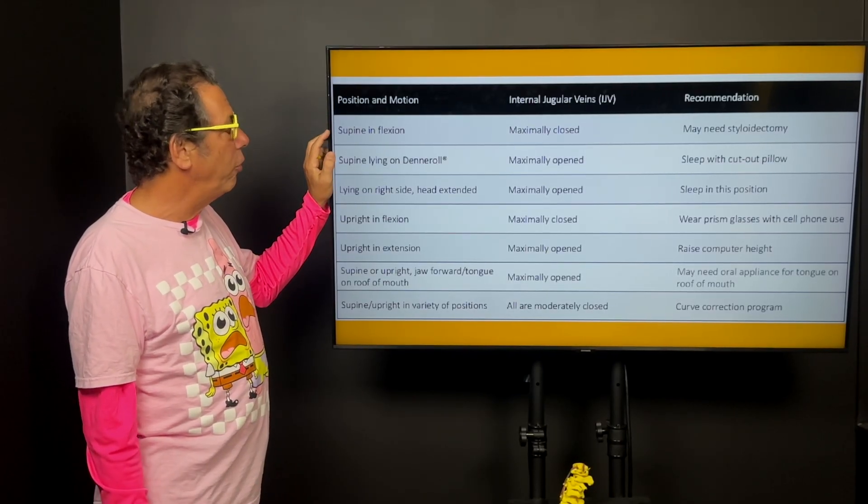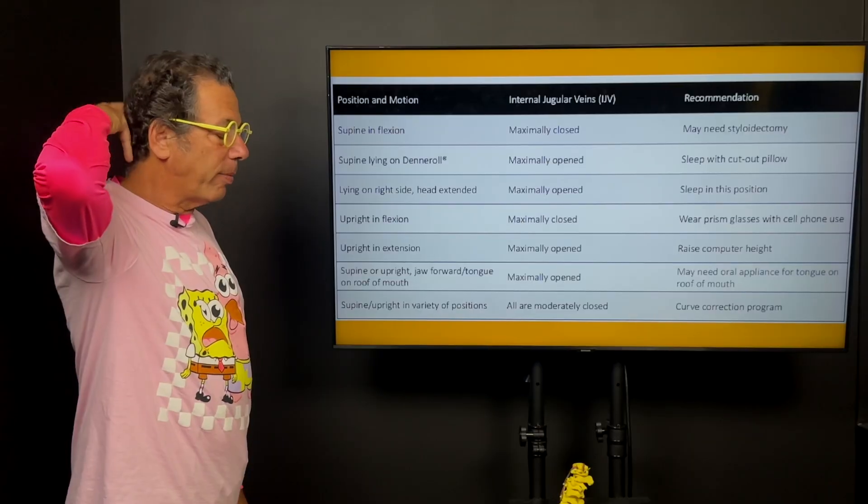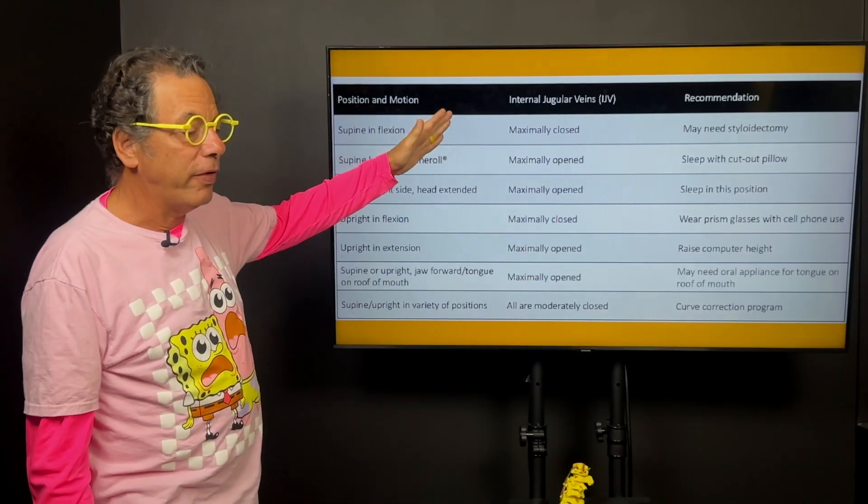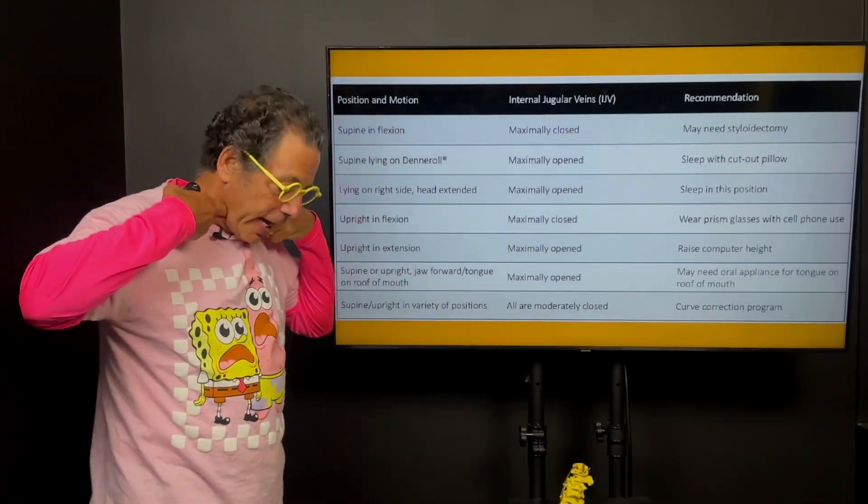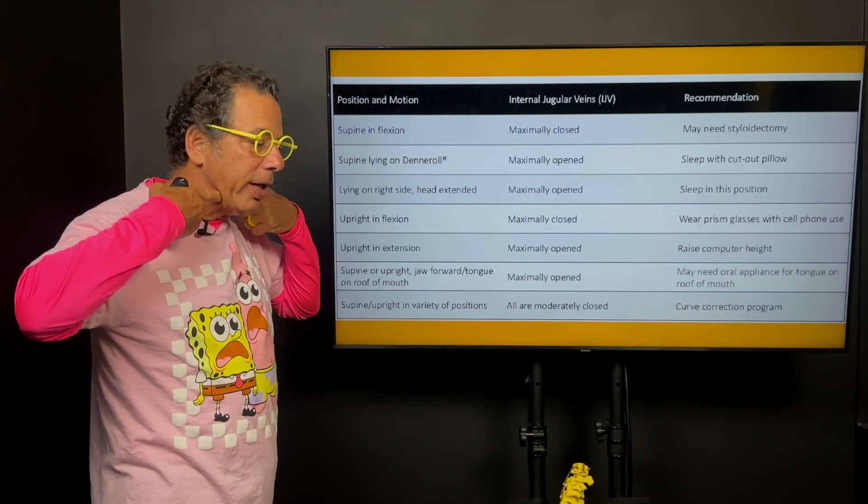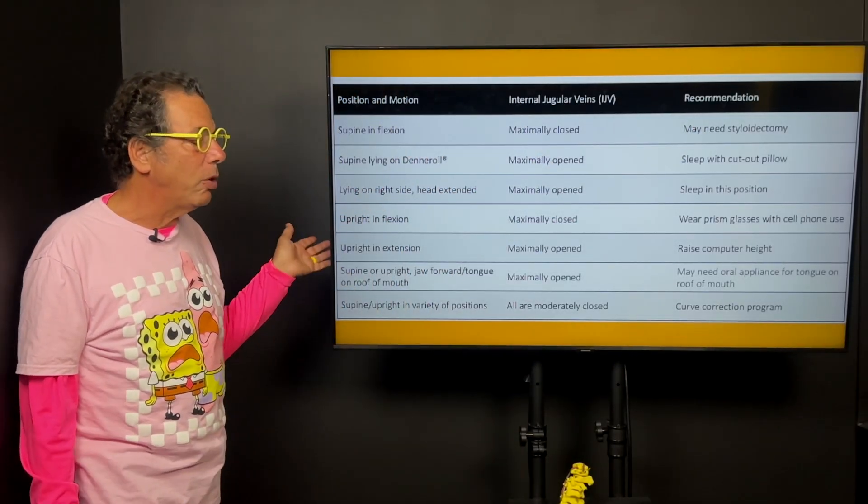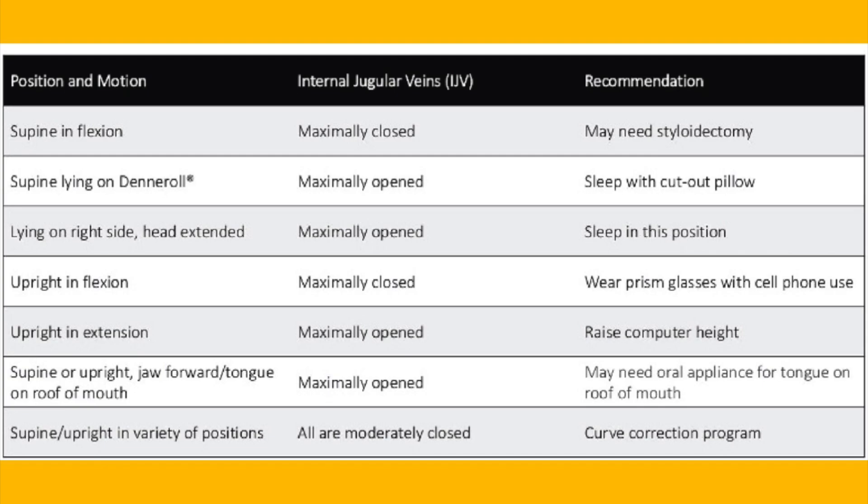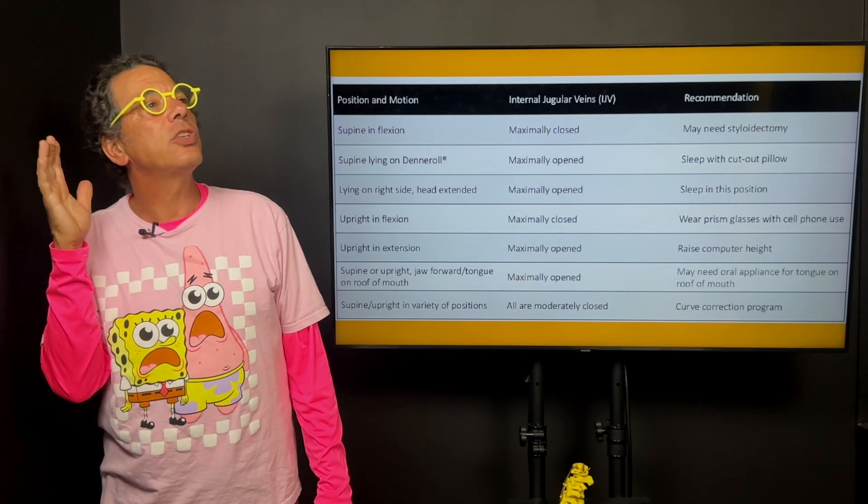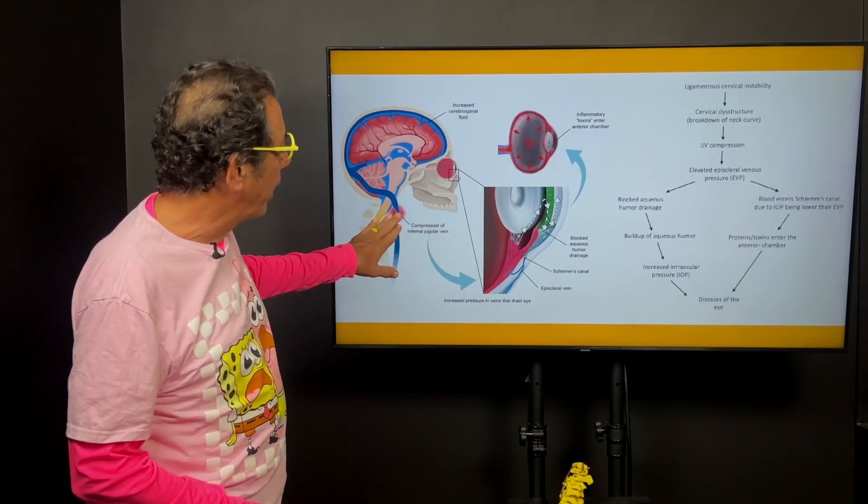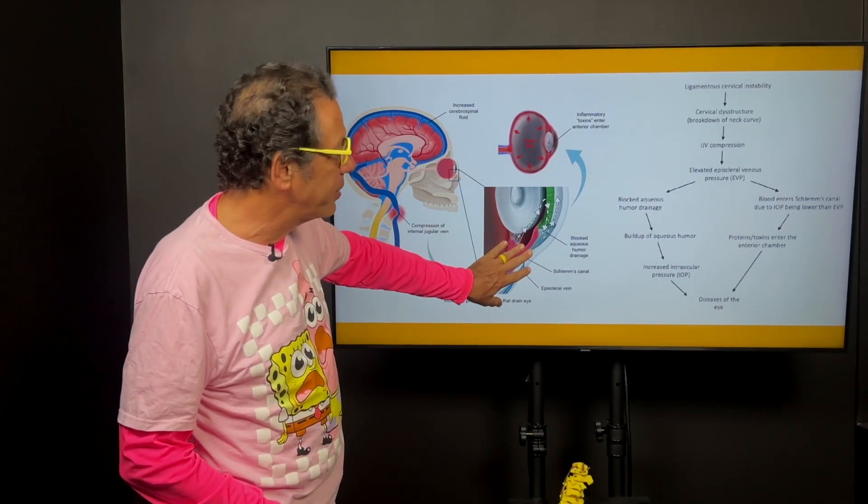So when somebody is in supine, like say they lay down and they have a bunch of pillows, so their neck's flexed and the jugular veins are all closed in that position, well it might be that they have excessively long styloid bones that are compressing the jugular. So occasionally somebody needs a styloidectomy. But normally what it is is that because of the breakdown of the neck curve, when they're laying on their back, the jugular veins are closed off. But when they put their neck in a certain position, especially in the lateral decubitus position, the jugular veins open.